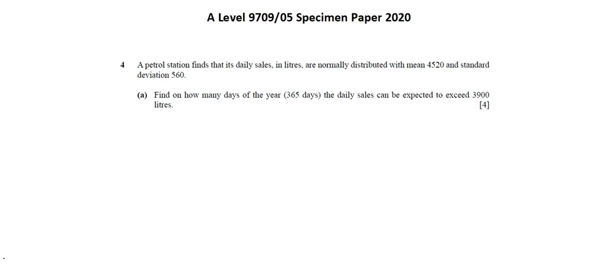So we're working with variable x, which follows a normal distribution with a mean of 4,520 and a variance of 560 squared. The probability that x is greater than 3,900 equals 1 minus the probability that x is less than or equal to 3,900.